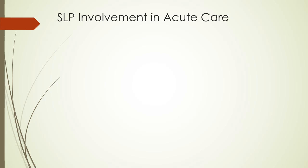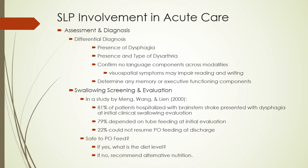As the SLP in the acute care setting, you will be involved in assessment and diagnosis. Identifying the presence and type of dysarthria and dysphagia will be key to the differential diagnosis, ascertaining whether the clinical picture matches the neurologist's thinking and the imaging studies. Language and cognitive components are less likely but should still be assessed. According to a study by Nang, Wang, and Lian, over 80% of patients hospitalized with brainstem strokes initially presented with dysphagia, almost all needing alternative feeding initially, and about one-fourth were still unable to PO feed at discharge.